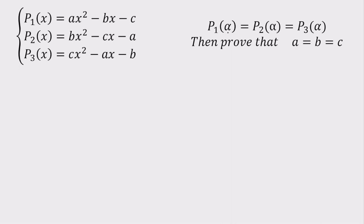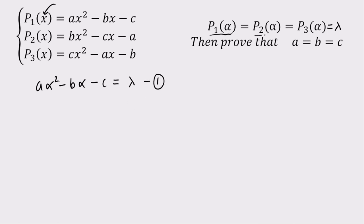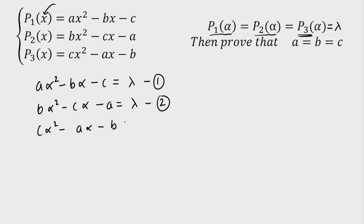Since P1(alpha), P2(alpha), and P3(alpha) are equal, let's say they are all equal to lambda. Equating P1(alpha) with lambda gives us: A·alpha² − B·alpha − C = lambda. This is our first equation. Similarly, P2(alpha) = lambda gives: B·alpha² − C·alpha − A = lambda. This is our second equation. And for the third, P3(alpha) = lambda gives: C·alpha² − A·alpha − B = lambda.